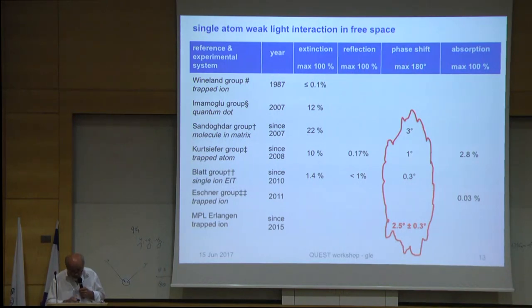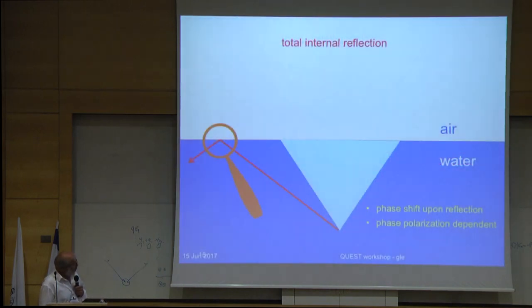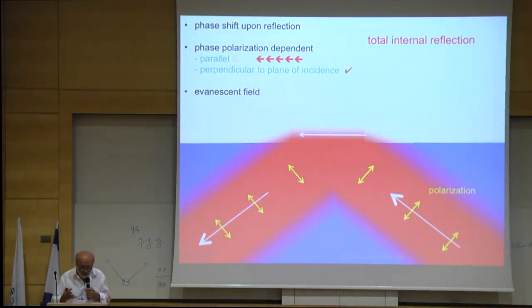So this was the first topic. Now I want to tell you about the nano beacon and steering light scattering. For this, I want to take you back to the basics, to total internal reflection. If you send a light beam towards an interface from the more dense optical medium, and if you look what happens at the interface, we know that there has to be some field on the other side called the evanescent field.